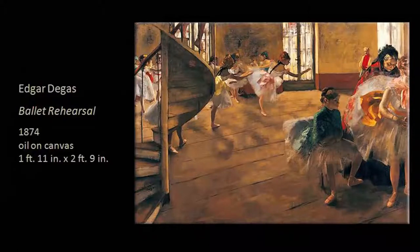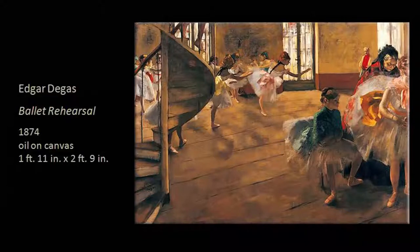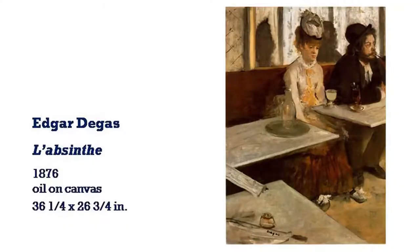Edgar Degas was also looking at the possibilities of capturing movement that is not static. He selected ballet rehearsals and different postures of dancers and ballet dancers as subject matter. At the same time, the fact that his paintings often look cropped — almost like a snapshot — is also an impact of his exposure to photography. Otherwise, Degas's paintings would look very unconventional and incomplete from a traditional standpoint.